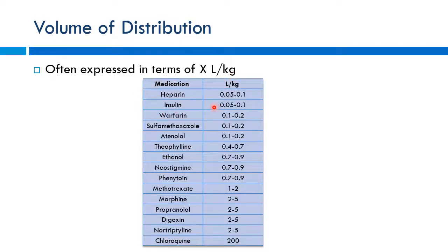Most drugs express VD in liters per kilogram; multiply by the patient's weight to get their individual VD. The range can be wide: insulin has a very low VD of about 0.05 to 0.1 L/kg — it stays in the bloodstream. Methotrexate, used for rheumatoid conditions and cancer, has a VD of around 1 to 2 L/kg — it distributes further into tissues. Then there are very lipophilic drugs with extremely high volume of distribution.